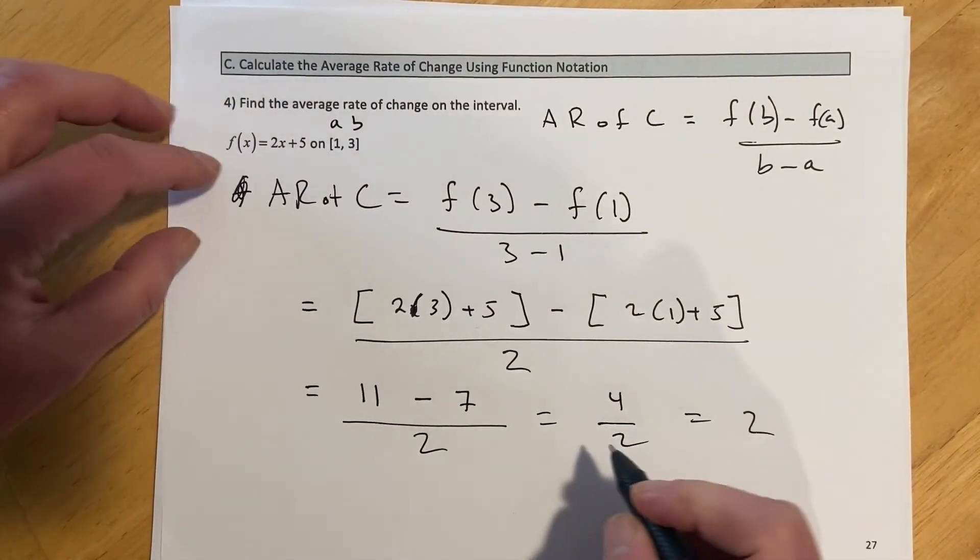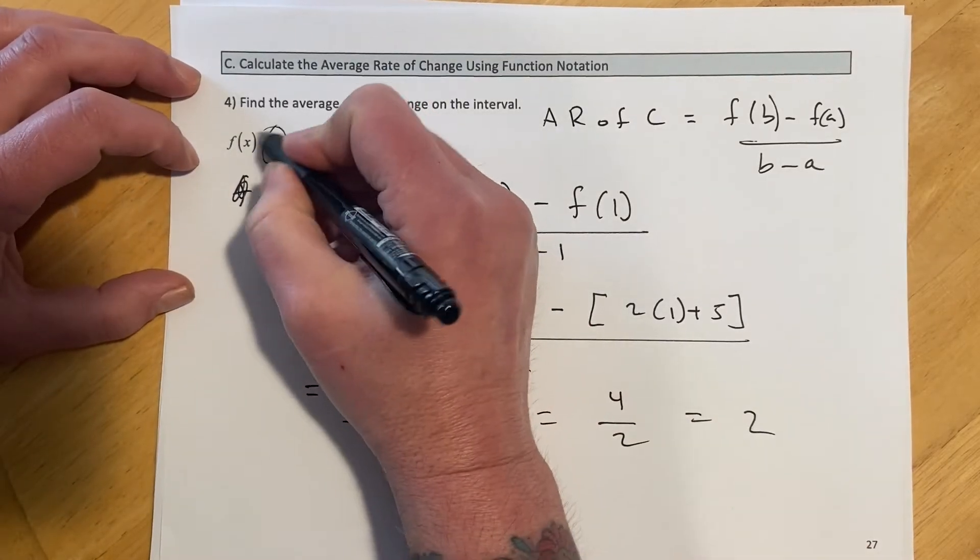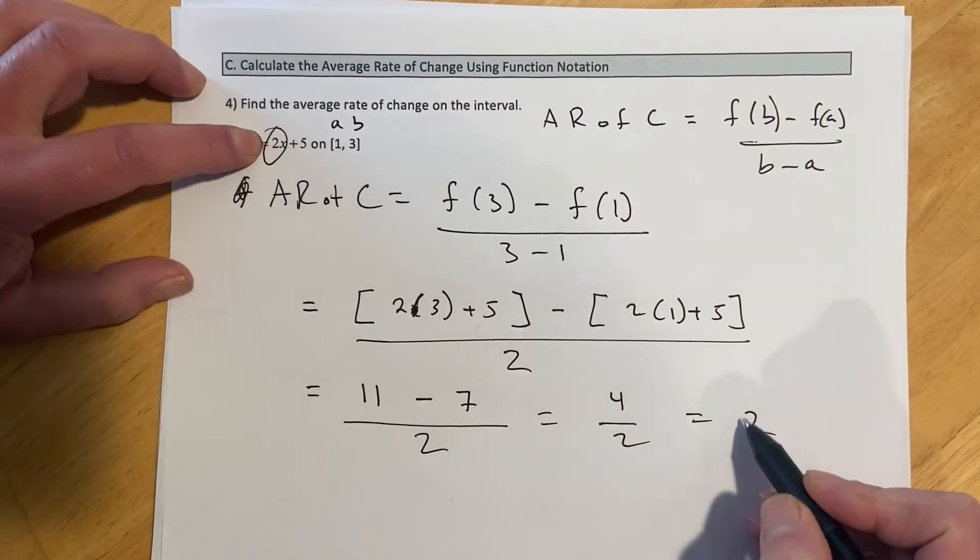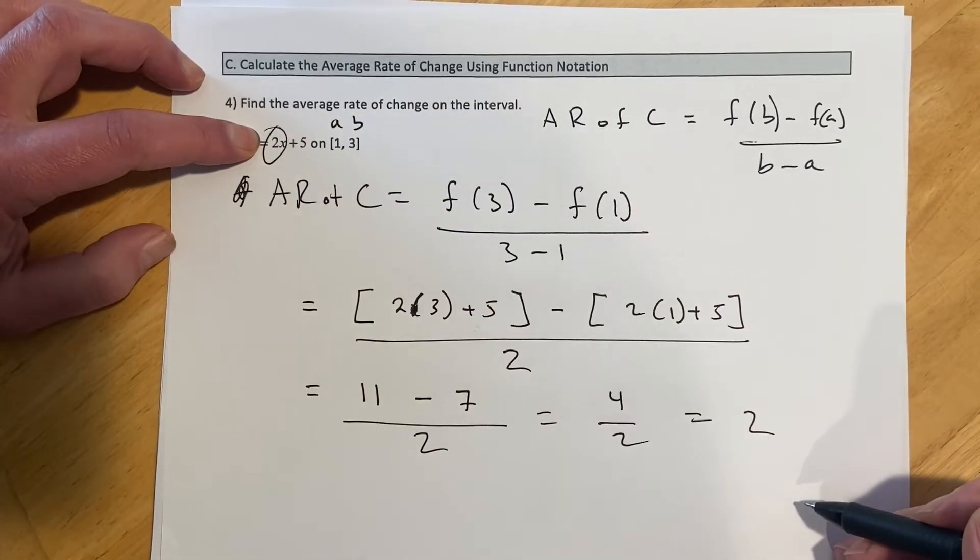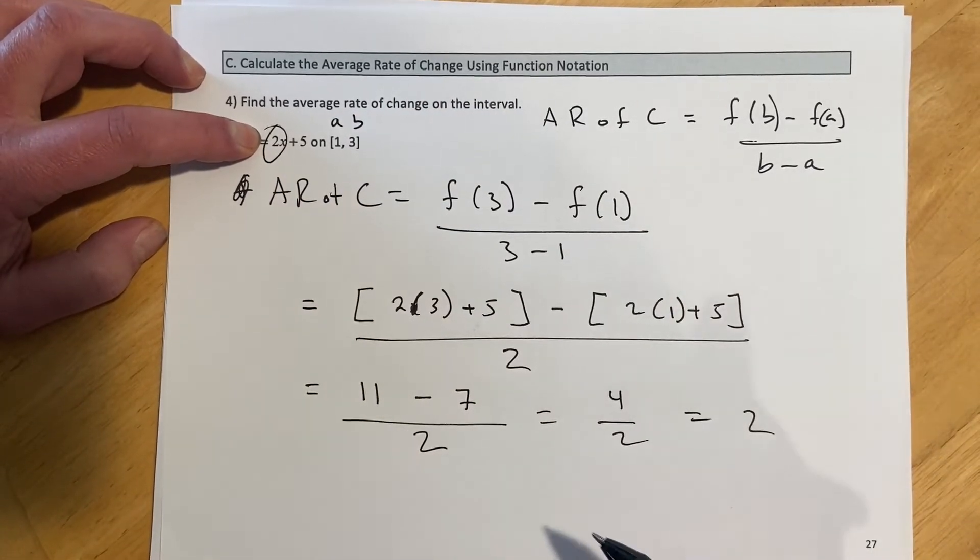Which makes complete sense, right, because we're finding average rate of change. This is a line, my slope was 2. I'm going to do all this mess to figure out that, yeah, it should better come out to 2, because average rate of change is the same thing as the slope.